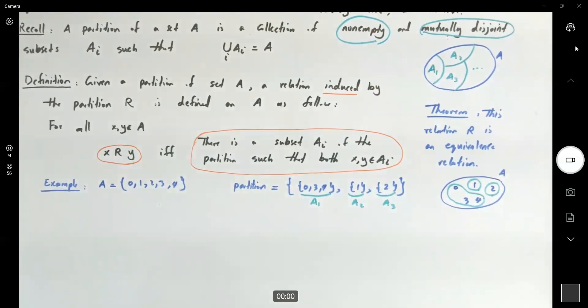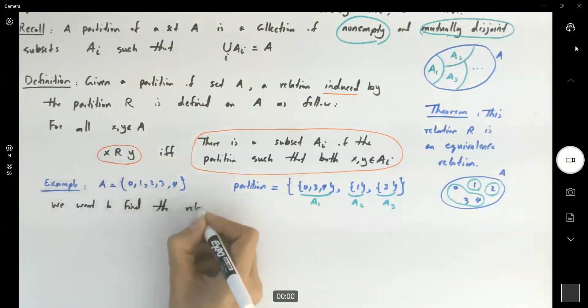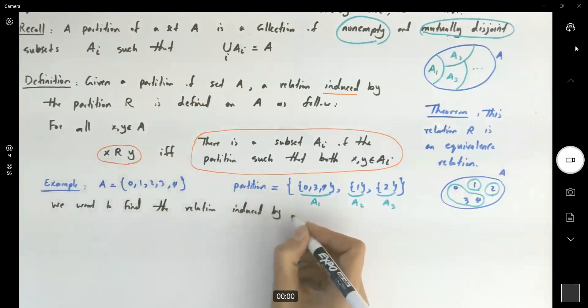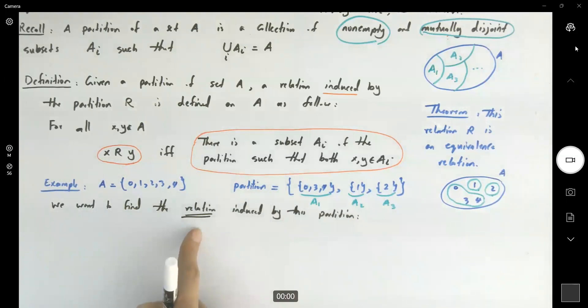Now our goal is to find the relation induced by this partition. How do I do that? Remember that when we are talking about a relation, we are talking about a collection of ordered pairs.